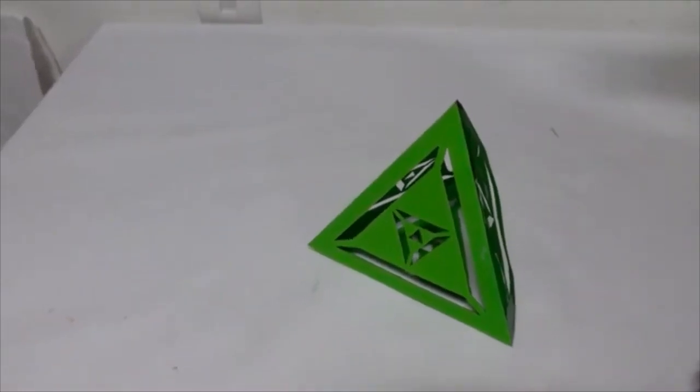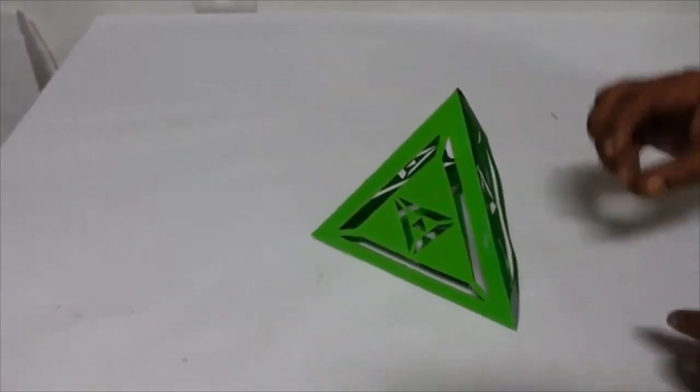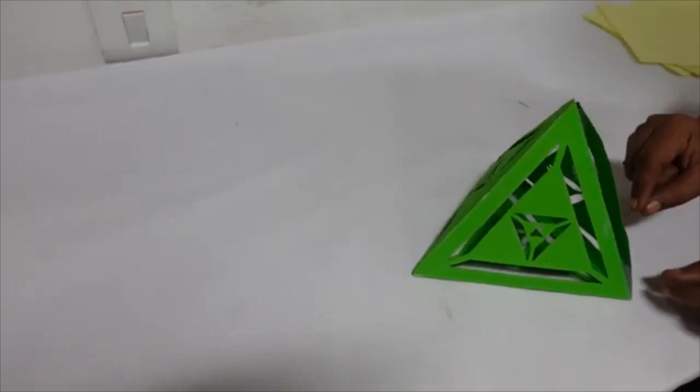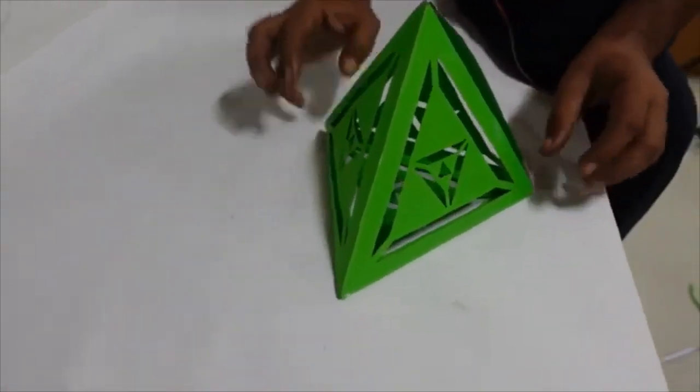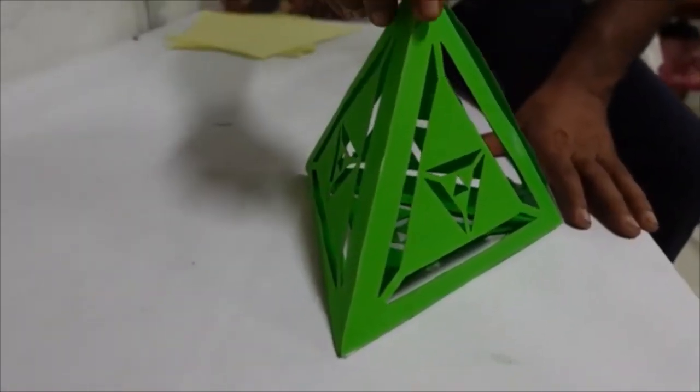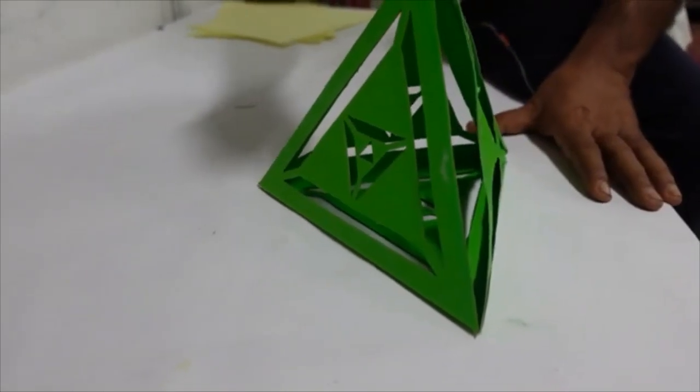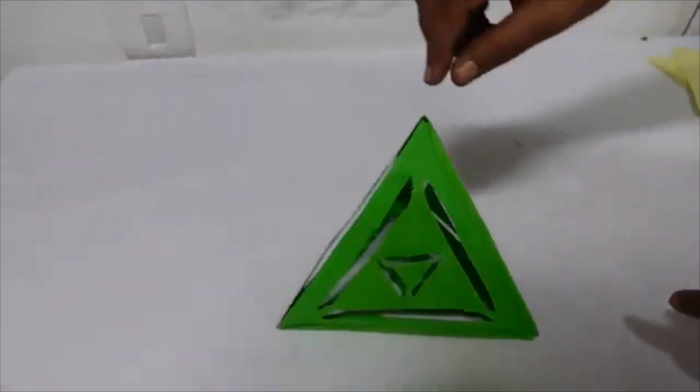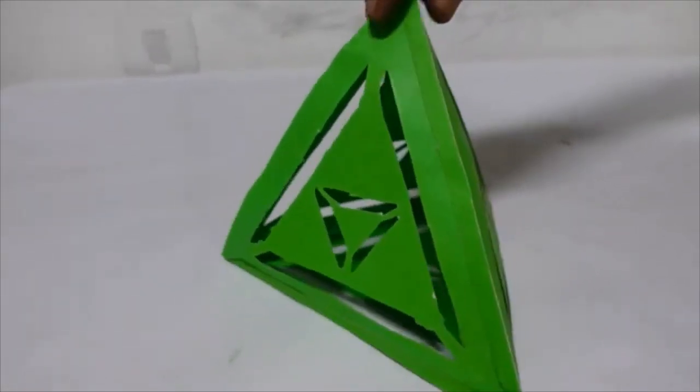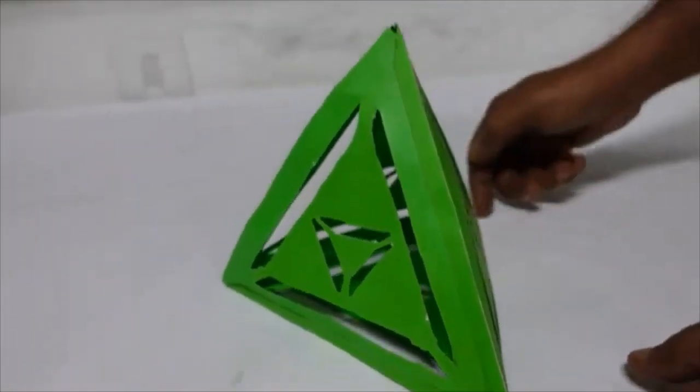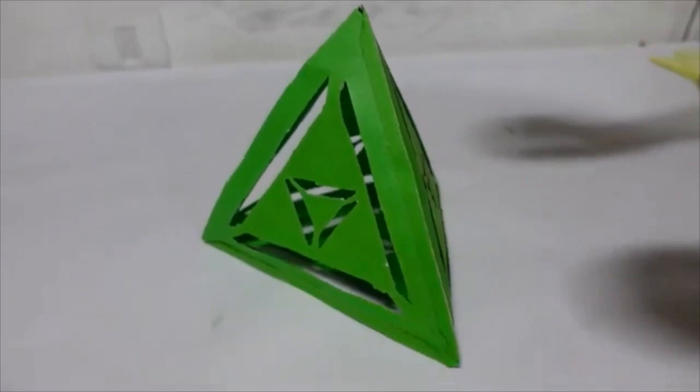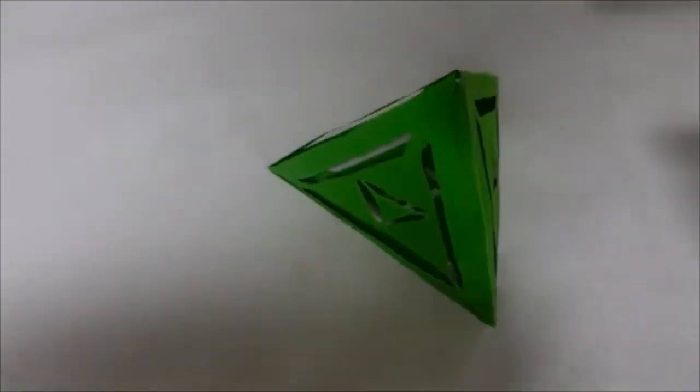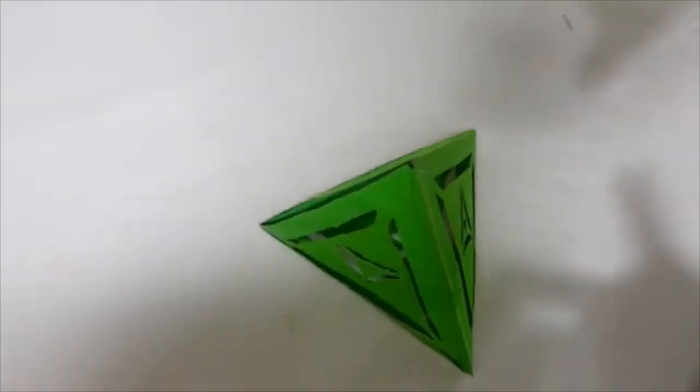Tetrahedron is the simplest 3D structure in nature as it is made from the simplest polygon, that is a triangle. It is made by joining four triangles. For making a closed 3D structure, minimum three polygons are required on one point. At every point three triangles are joined. Total there are four triangles. That's why it's the simplest 3D structure or polyhedron that exists in nature.